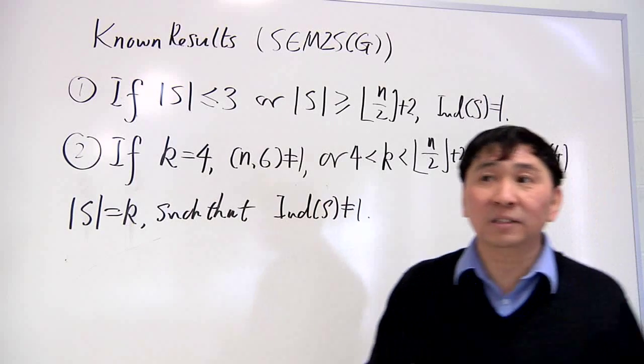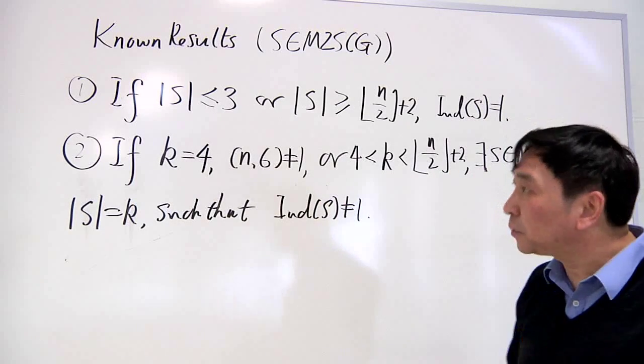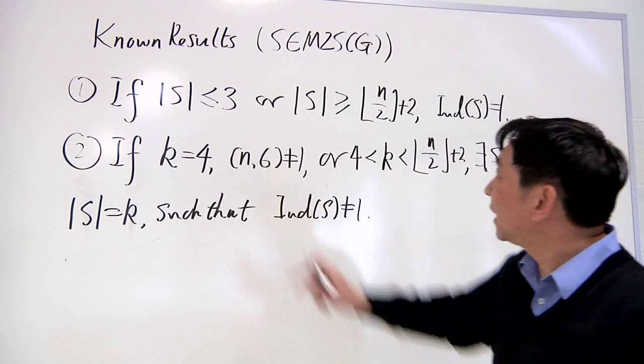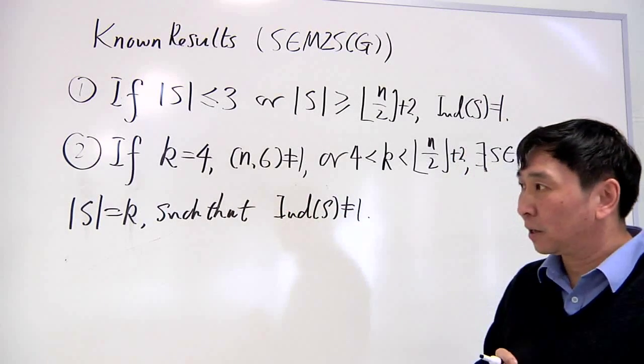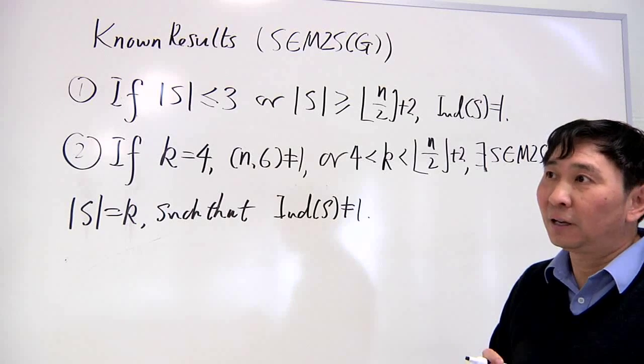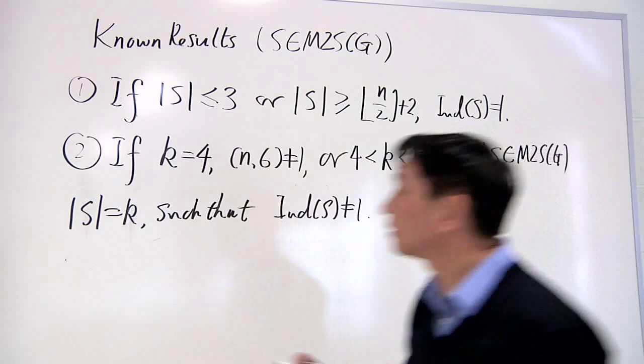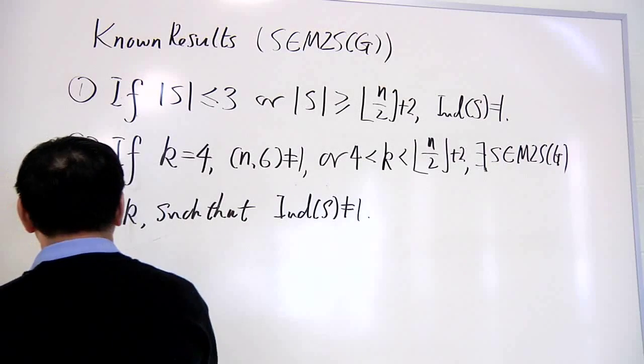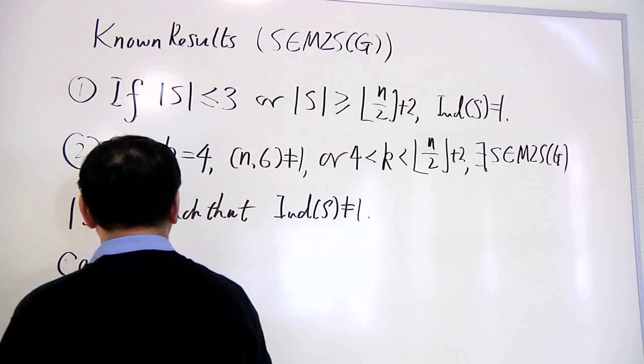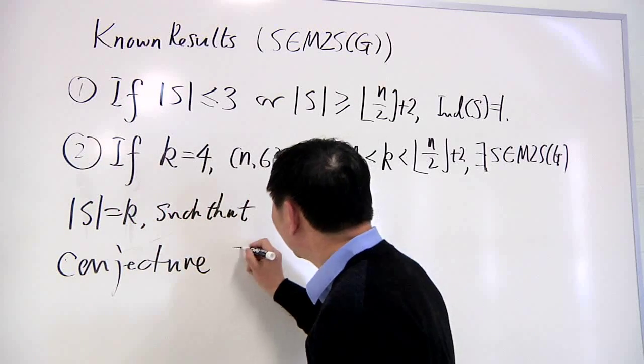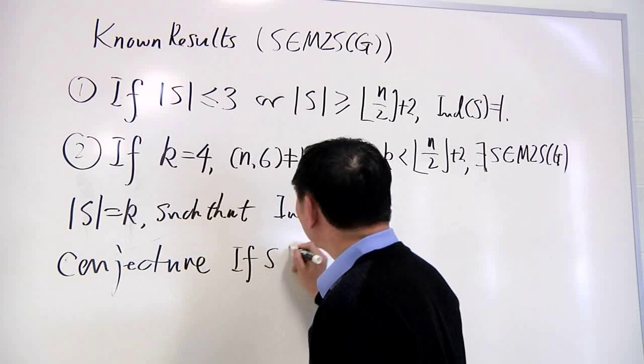The only unsolved case is a minimal zero-sum sequence with length 4 where n and 6 are co-prime - whether such a sequence has index 1. In fact, there is a conjecture which says: